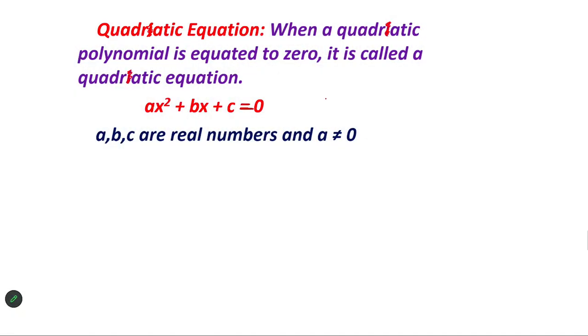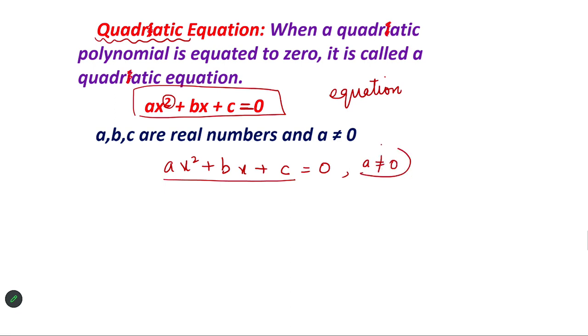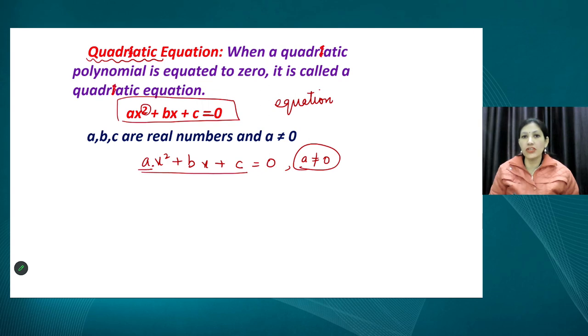Let us start with the recapitulation for our viewers. What is a Quadratic Equation? In our previous session, we studied which type of equations are known as Quadratic Equations. All expressions in which we have a sign of equality are known as Equations. It will be known as a Quadratic Equation if the highest degree of the variable is 2. In this equation, we can see AX squared plus BX plus C, which is a quadratic polynomial, and when equated to 0 it is a Quadratic Equation.